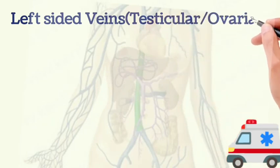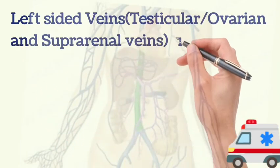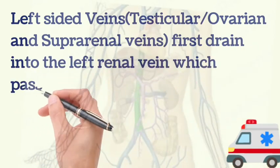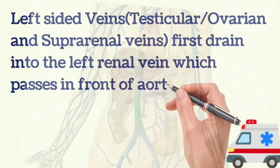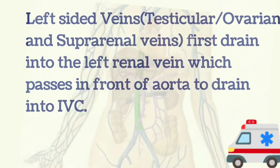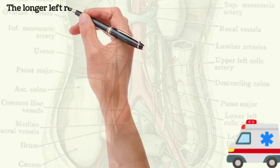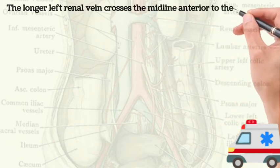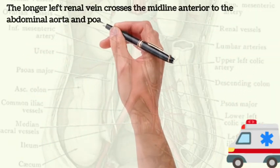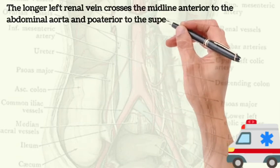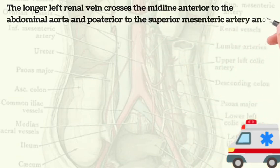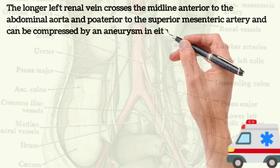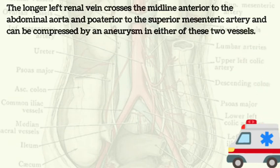Left-sided veins — the left testicular vein in males, the left ovarian vein in females, and the left suprarenal vein — first drain into the left renal vein. The longer left renal vein crosses the midline, passing anterior to the abdominal aorta and posterior to the superior mesenteric artery, and can be compressed by an aneurysm of either of these two vessels.